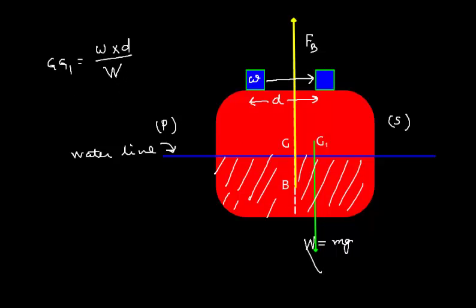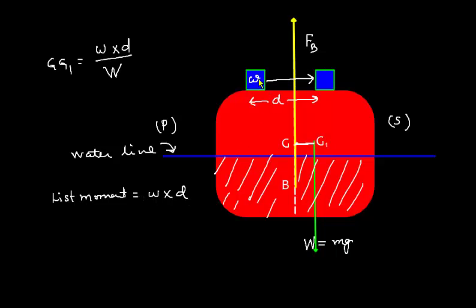If you look carefully, there are two forces acting in opposite directions — the buoyancy force acting upward and the displacement acting downward. They form a couple, and the moment of this couple will try to incline or list the ship. The list moment is nothing but the weight multiplied by the distance. We can write that GG1 equals the list moment divided by W.